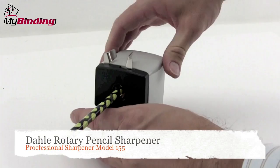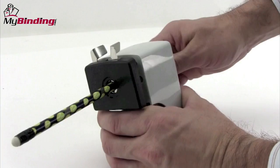Welcome to MyBinding video. This is a quick look at the Dahle Rotary Pencil Sharpener, the Model 155, a professional pencil sharpener.